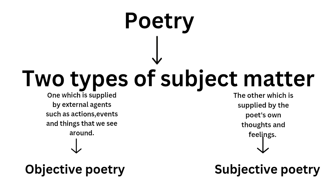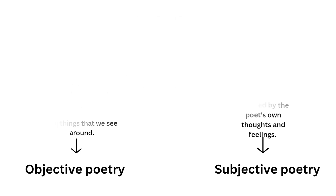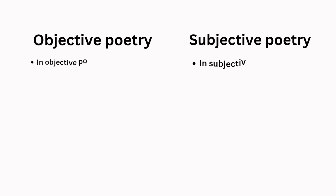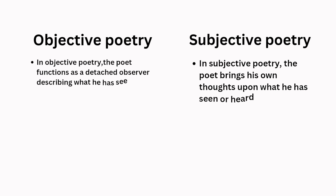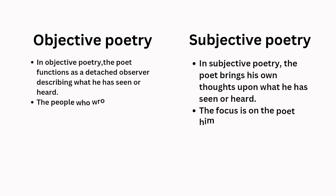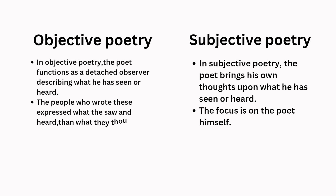The former gives rise to objective poetry and the latter to subjective poetry. In objective poetry, the poet functions as a detached observer describing what he has seen or heard, while in subjective poetry the poet brings his own thoughts about what he has seen or heard.